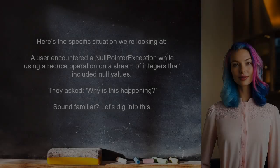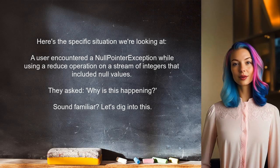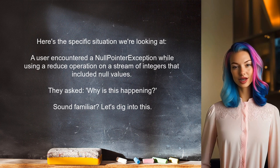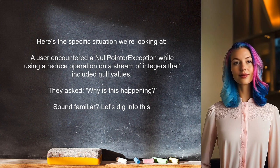Here's the specific situation we're looking at. A user recently encountered a null pointer exception while using a reduce operation on a stream of integers that included null values. They shared their code and asked, why is this happening? Sound familiar? Let's dig into this and find a solution.